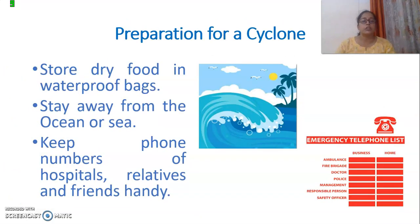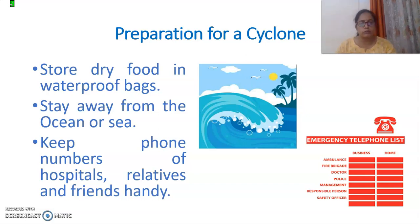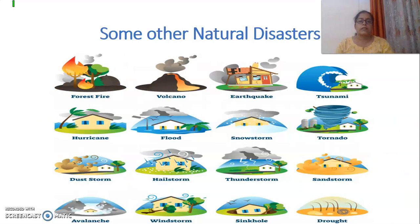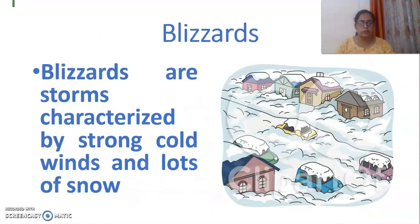We should store dry food — that means dry fruits etc. — in a waterproof bag, so that we will have them in an emergency. We should always stay away from the ocean and sea, and we should keep all emergency numbers with us. There are some other natural disasters we are going to talk about.